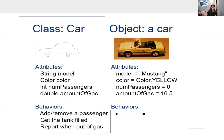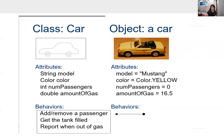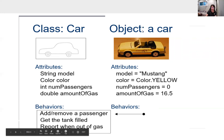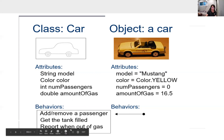Here's an example with class Car. Its attributes could be model, color, number of passengers, and how much gas it has. Its methods could be a person entering or exiting the car, filling the gas tank, or indicating when gas runs out. An object in this class — say, a Mustang — might have color yellow, zero passengers, and 16.5 units of gas, and it has all those methods available to it.